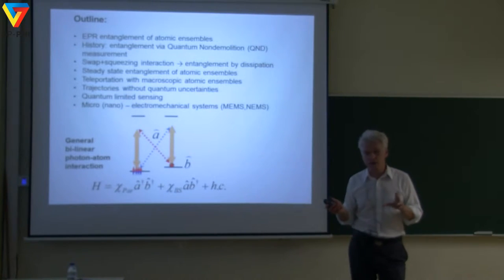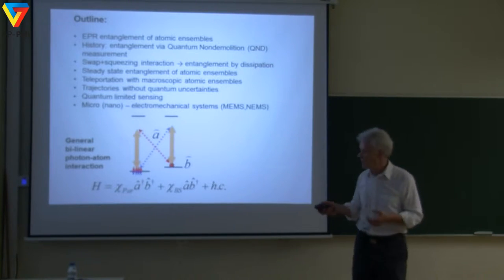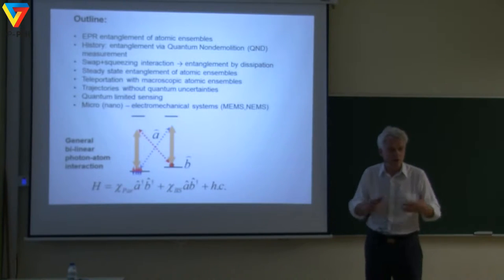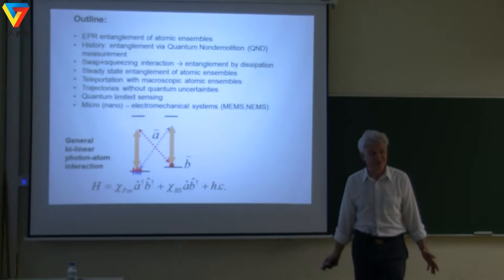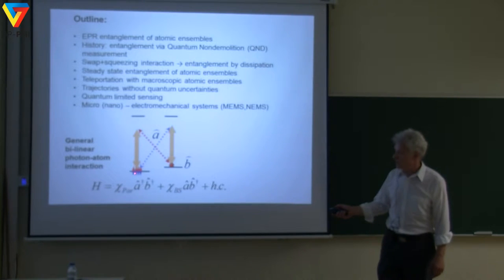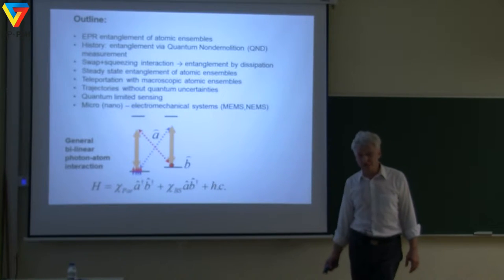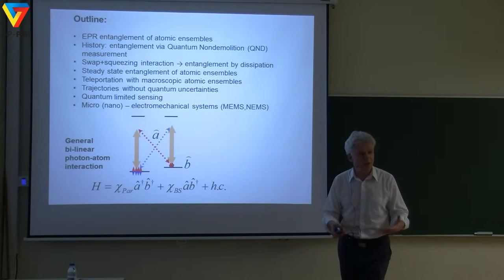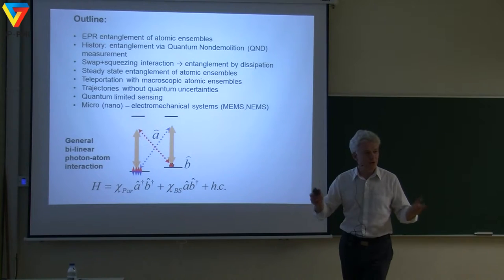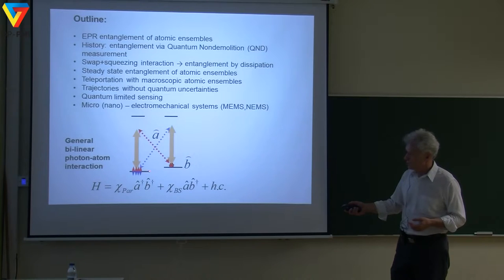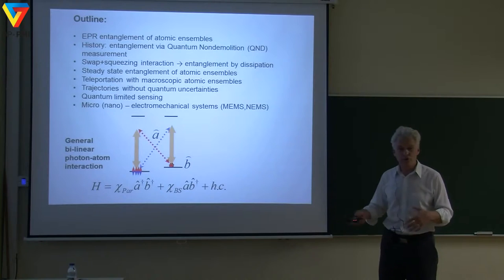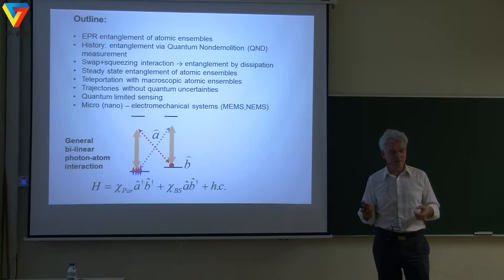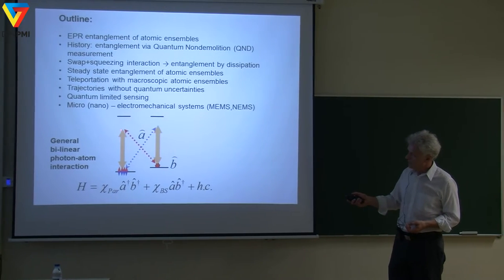There is almost no spontaneous emission between those two levels because these are essentially optically forbidden transitions. That means if you create some coherent superposition of those two levels, it can live for a long time. I will show experiments where this lives for a fraction of a second, and this time defines the quantum memory time. Those two ground substates of the atom are used to store quantum bits and create entanglement.